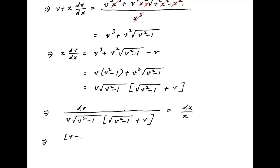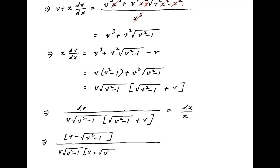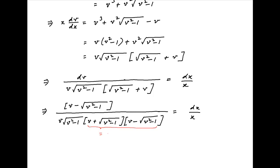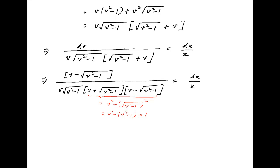On the left-hand side, multiply numerator and denominator by v minus the square root of v squared minus 1. The denominator becomes v times the square root of v squared minus 1, multiplied by v plus the square root of v squared minus 1 times v minus the square root of v squared minus 1, which equals v squared minus (v squared minus 1), simplifying to 1. Therefore the equation simplifies to v minus the square root of v squared minus 1, divided by v times the square root of v squared minus 1, dv equals dx upon x.